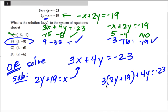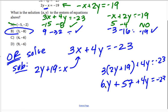So you would get 3 times this 2y + 19 plus 4y is -23. And if you do that, you're going to get 6y + 57 + 4y = -23. So you're going to get 10y. When I subtract the 57 over, I should get -80, and there's my y = -8, and that is enough for me to narrow it down to the right answer.